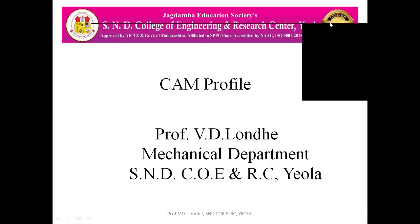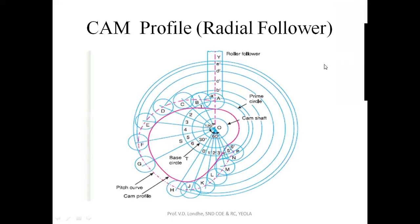Today we are going to see the cam profile. In the previous lecture we saw the different types of displacement diagrams of the follower, and from that displacement diagram we now have to draw the cam profile. The first cam profile is for the radial follower. The radial follower is one where the center line of the follower is in line with the center line of the cam axis.